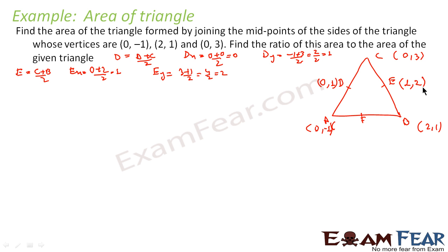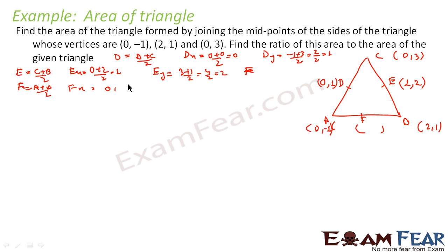Similarly, you can find the value of F. F is nothing but the midpoint of A and B. F of X is 0 plus 2 by 2, that is 1. F of Y is minus 1 plus 1 by 2, that is 0. So F is (1, 0).